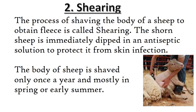The second step is shearing. The process of shaving the body of a sheep to obtain fleece is called shearing. The shorn sheep is immediately dipped in an antiseptic solution to protect it from skin infection. The body of the sheep is shaved only once a year, mostly in spring or early summer.